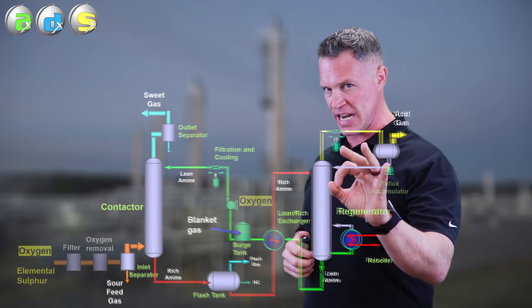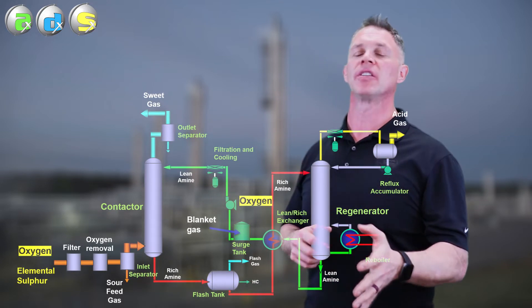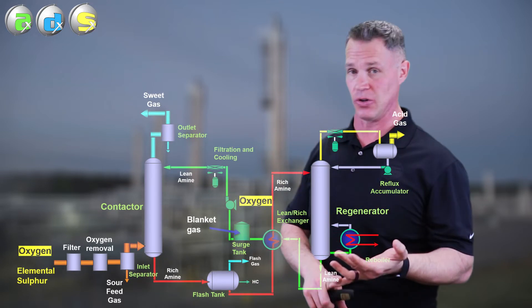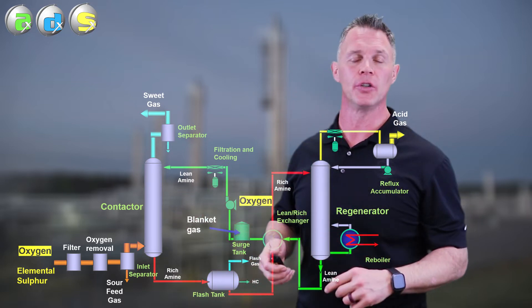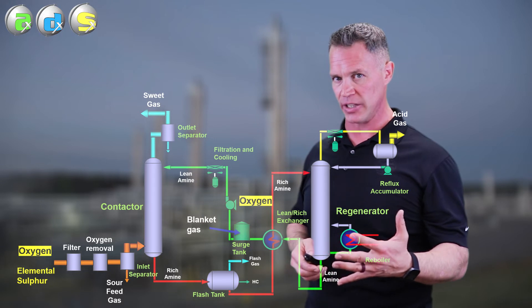If the oxygen is in your feed gas, you know it's in the feed gas because either you don't have a surge tank or you do have one and the blanket gas is on, you check the valve and it's open, then it's coming in from the feed gas.